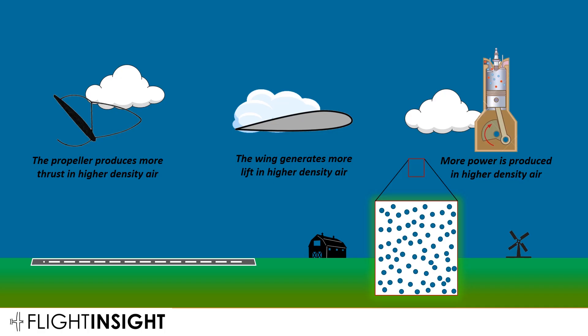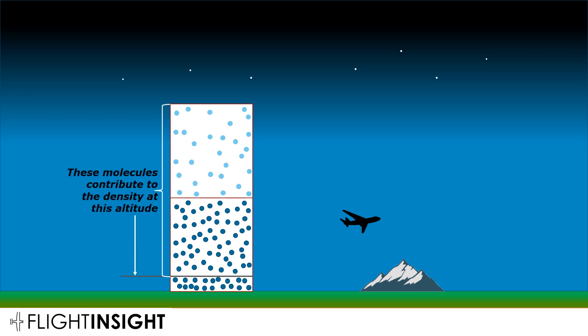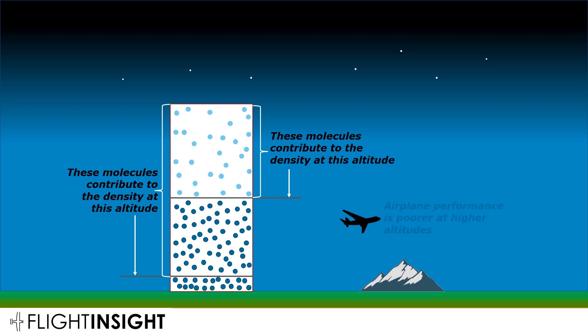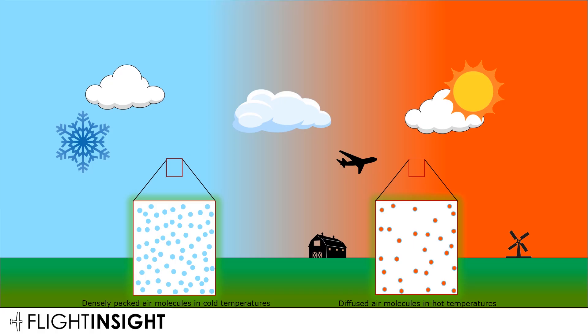Air density is affected by a few things. When we're flying, there's an ocean of air above us in a column going straight up to space. The air molecules in this column compress the ones underneath, so close to the surface all the molecules above contribute to a certain air density, while at higher altitude fewer molecules above contribute to lower density. So airplane performance is poorer at higher altitudes. Temperature affects air density too — cold air has less energy and the molecules don't move around much, so they group together. As temperature increases, molecules start moving and bouncing off each other, spreading out and making the air less dense.